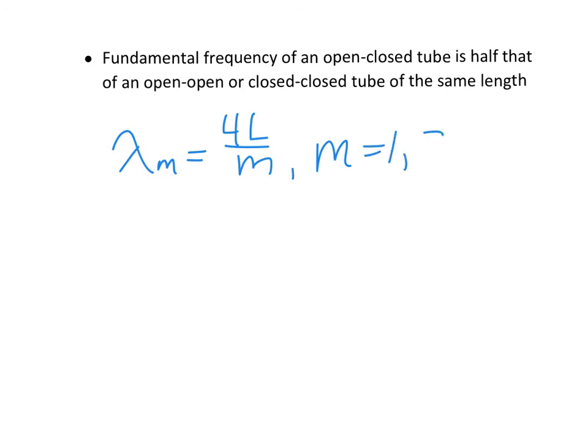So your lambda for each mode number will equal 4L over M. But M is only odd. So one, three, five, keeps going.